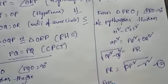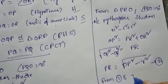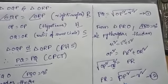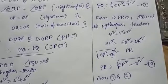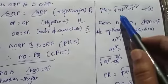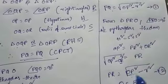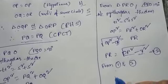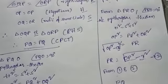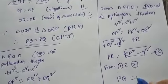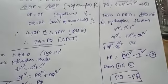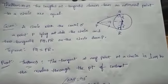Equating equation 1 and equation 2, PQ equals PR. Therefore, the lengths of the tangents drawn from an external point to a circle are equal.